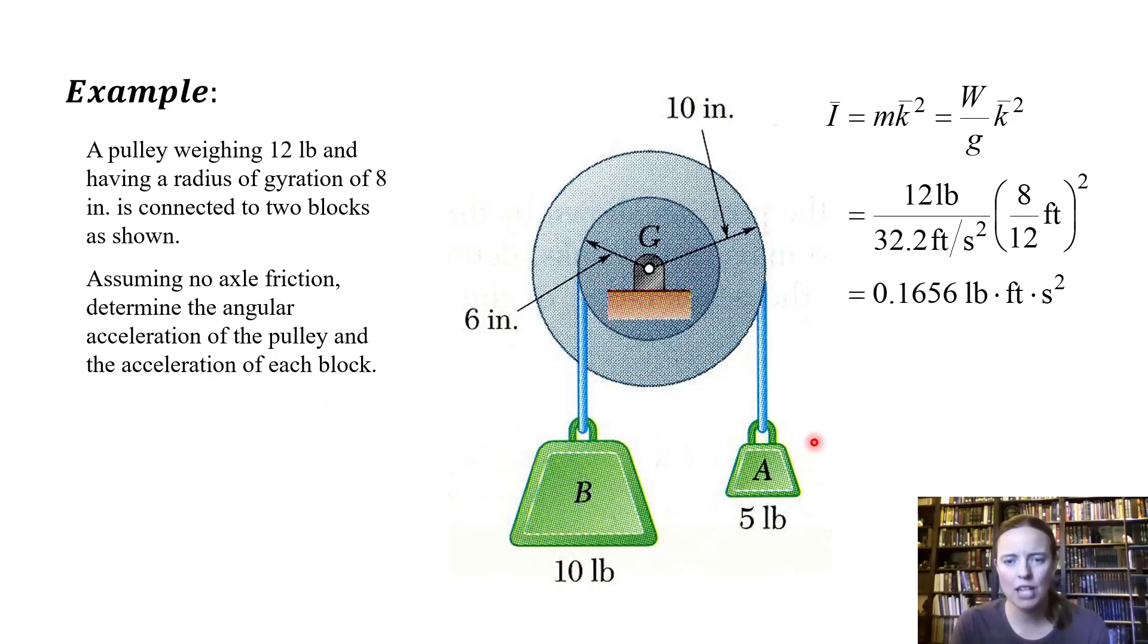So the pulley is rotating, the blocks are moving around, we have three different things to keep track of here. For the pulley, rotational motion - remember forces add to ma, moments are going to add to I alpha. For our moment of inertia, instead of r squared m, it's going to be the radius of gyration squared m. Keep everything in terms of feet instead of inches, so this is mk² times W over g, which equals 0.1656 lb·ft·s². Here's our inertia that we're going to be using in our moment balance.